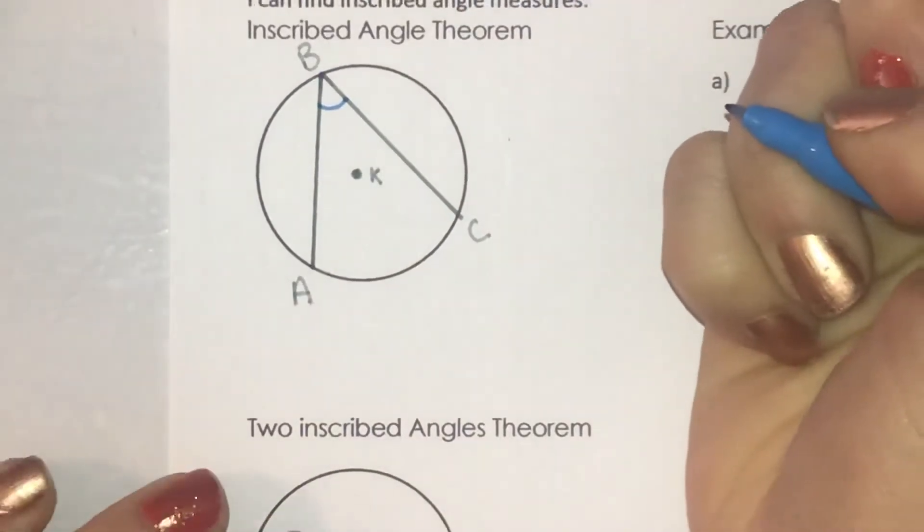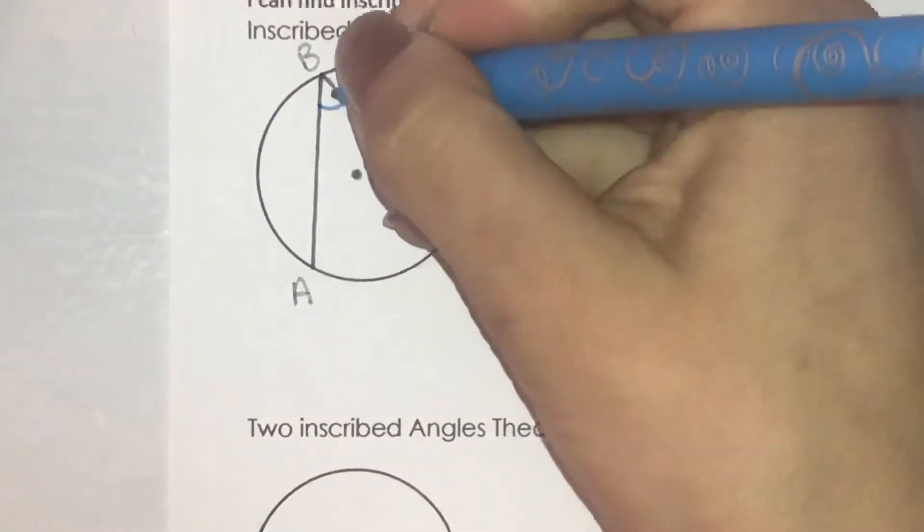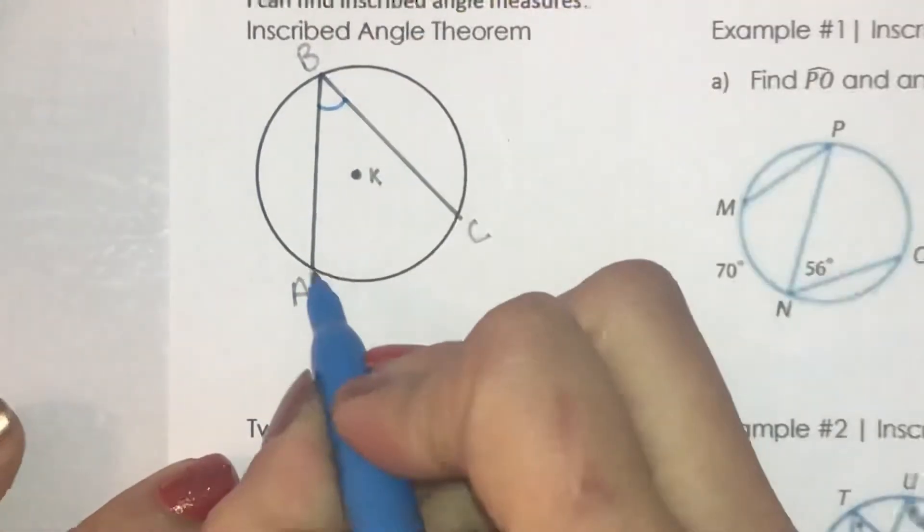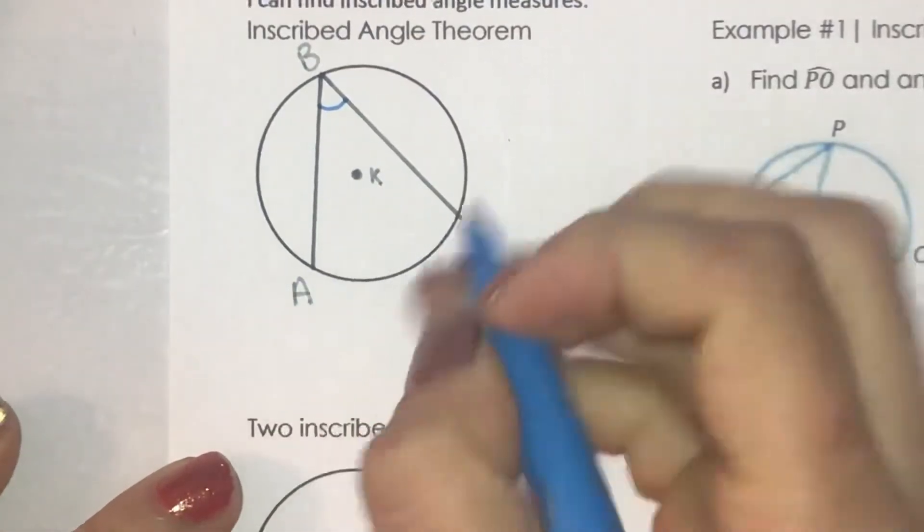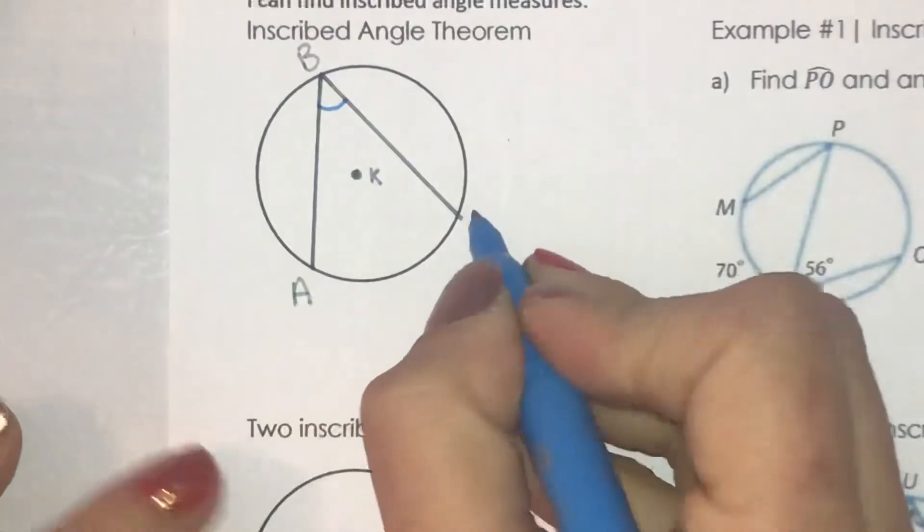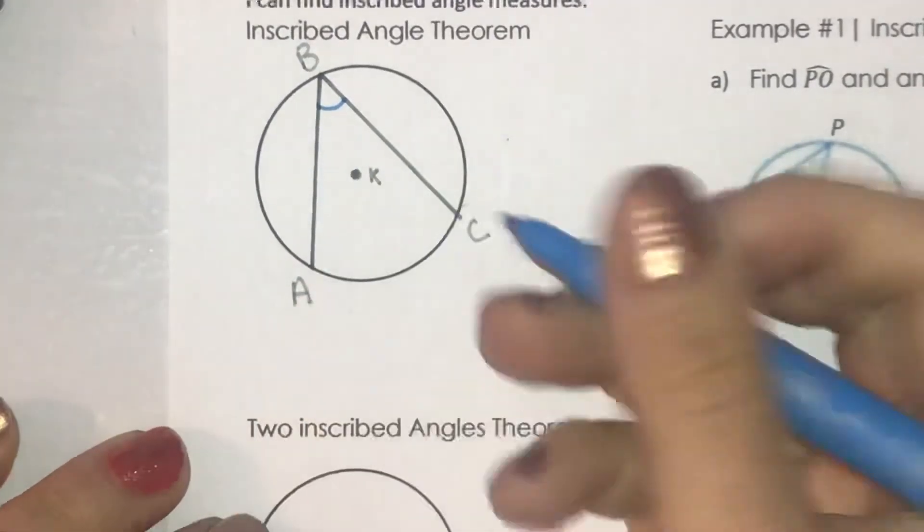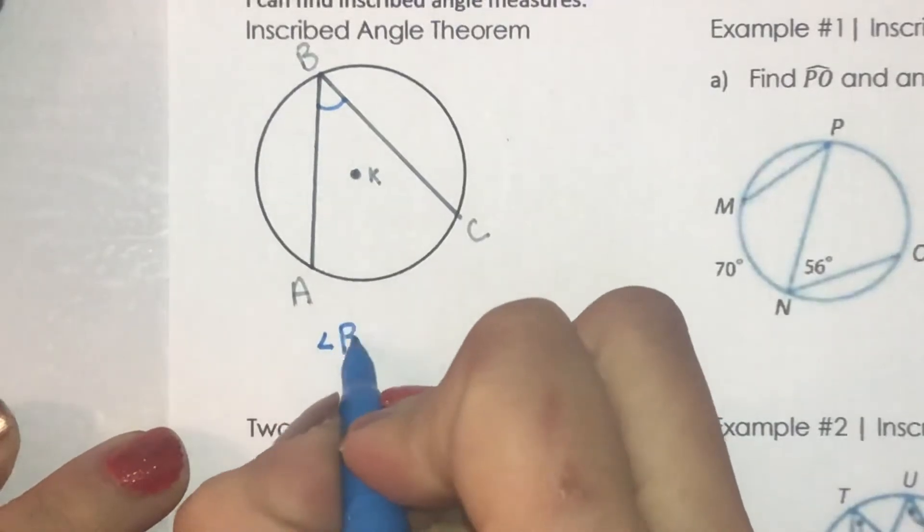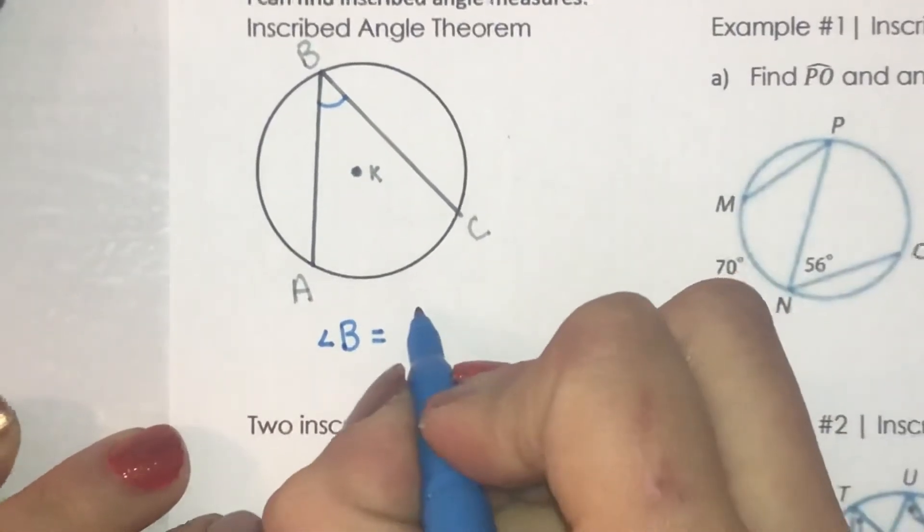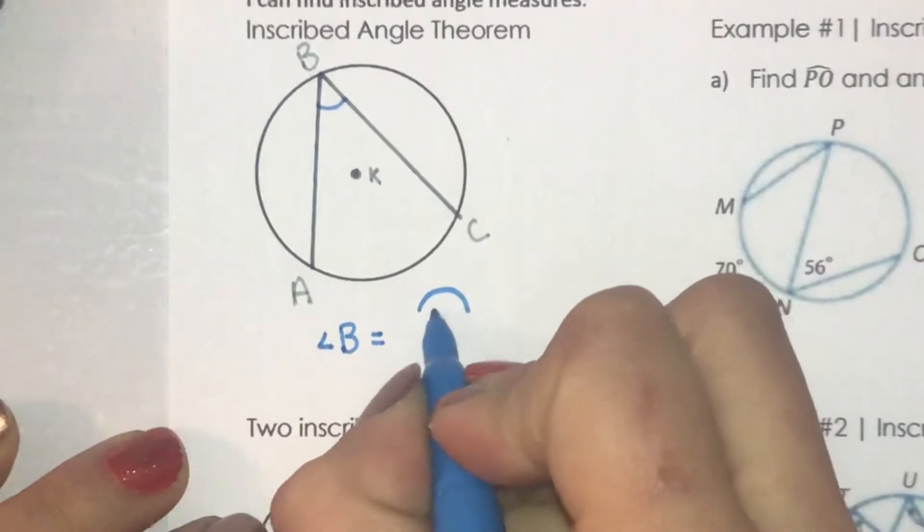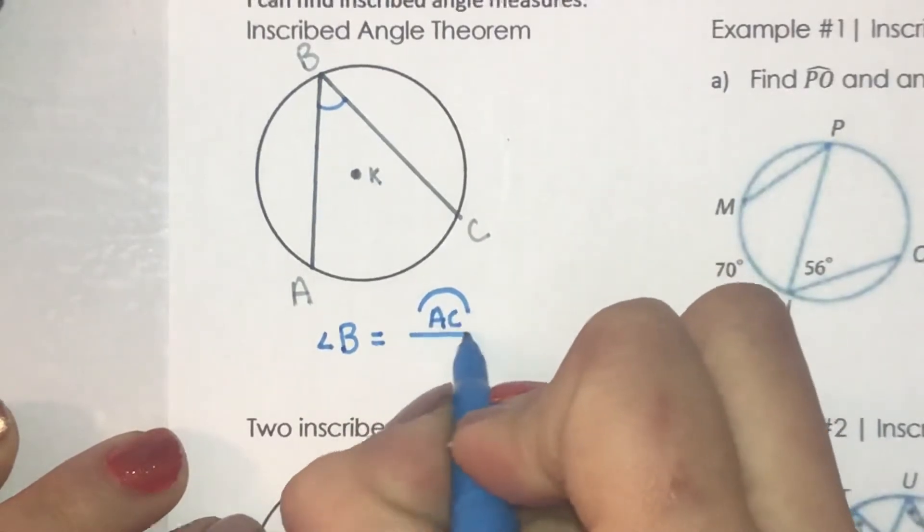Okay, angle B is going to be one half of the arc measure that it was created. So we have angle B and arc AC. So how we write this is that angle B is going to equal the arc of AC divided by 2.